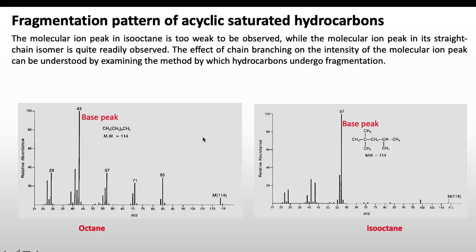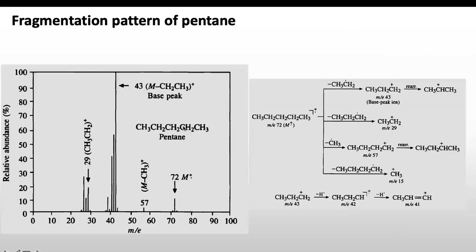Other peaks in isooctane appear after the loss of CH2 or CH3 groups from the molecule. Now let's examine the fragmentation pattern of pentane. Pentane has a molecular weight of 72, so we observe a peak for the molecular ion at m/z 72 with significant intensity. The base peak is at 43, which shows 100% abundance. Other peaks are observed at 57, 29, 42, and 41.